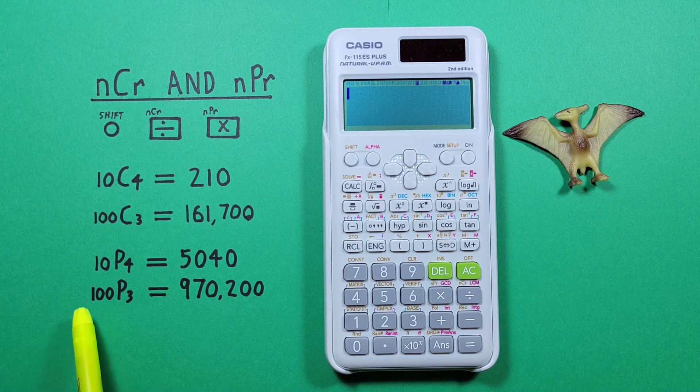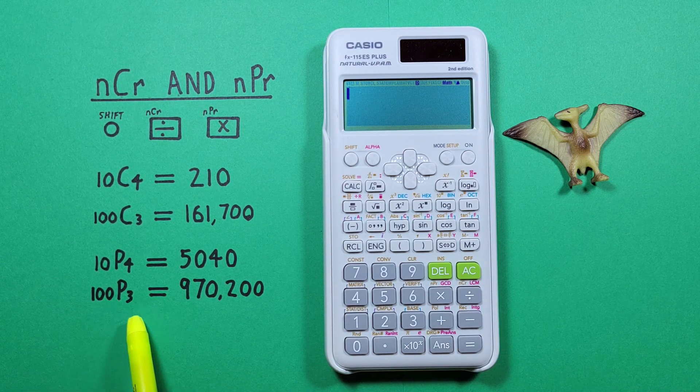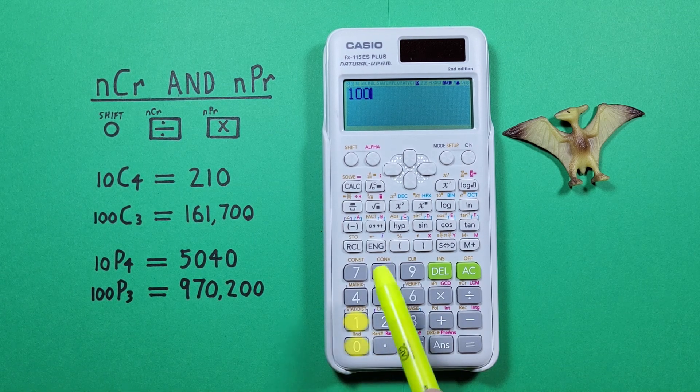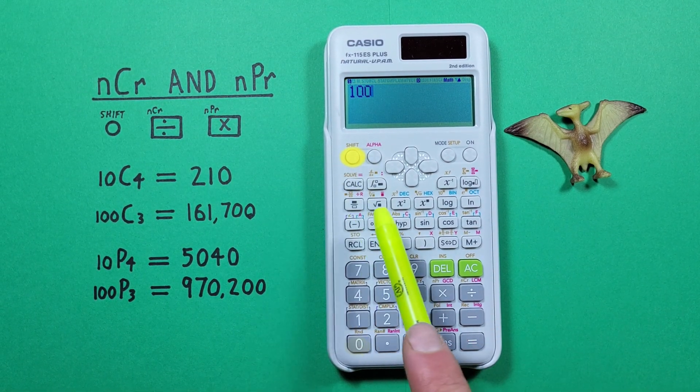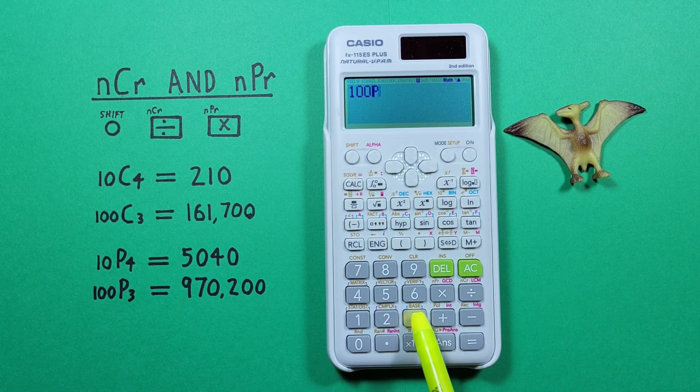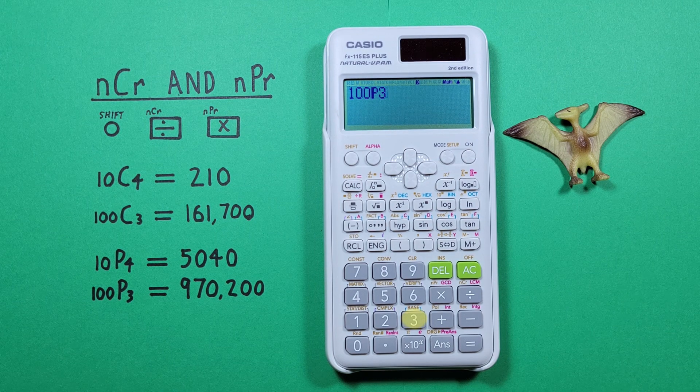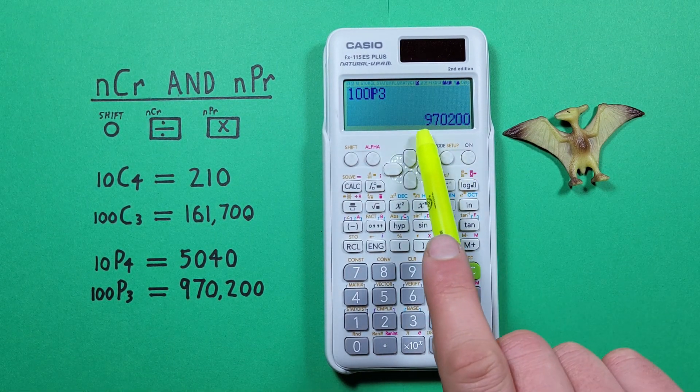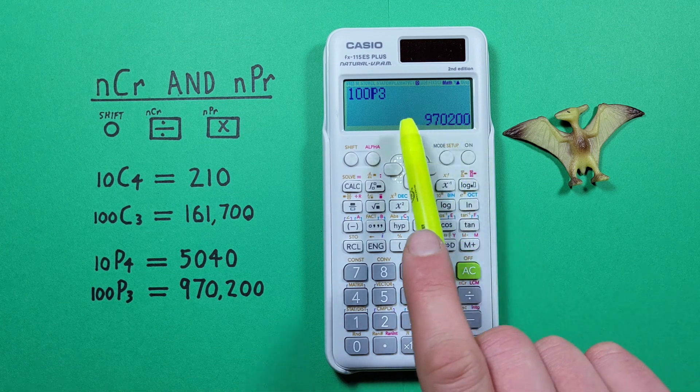Another example, if we have 100 choose 3 permutations, again we start with the 100, shift and then the multiplication key, we see that P there for permutations and then our 3 and press equals and see we get 970,200 possible permutations.